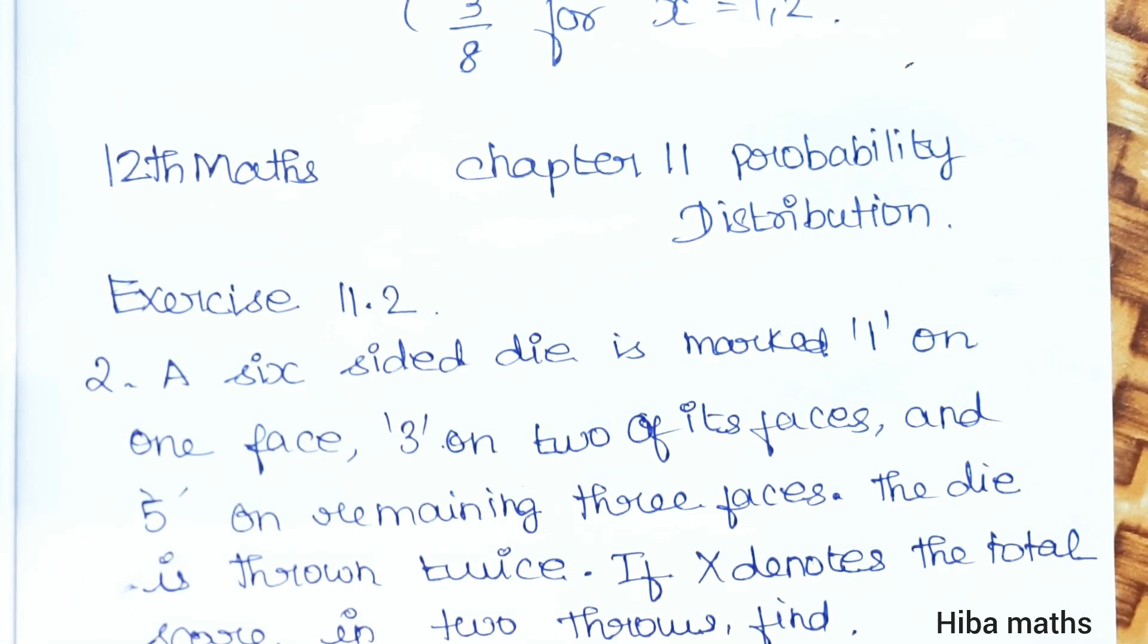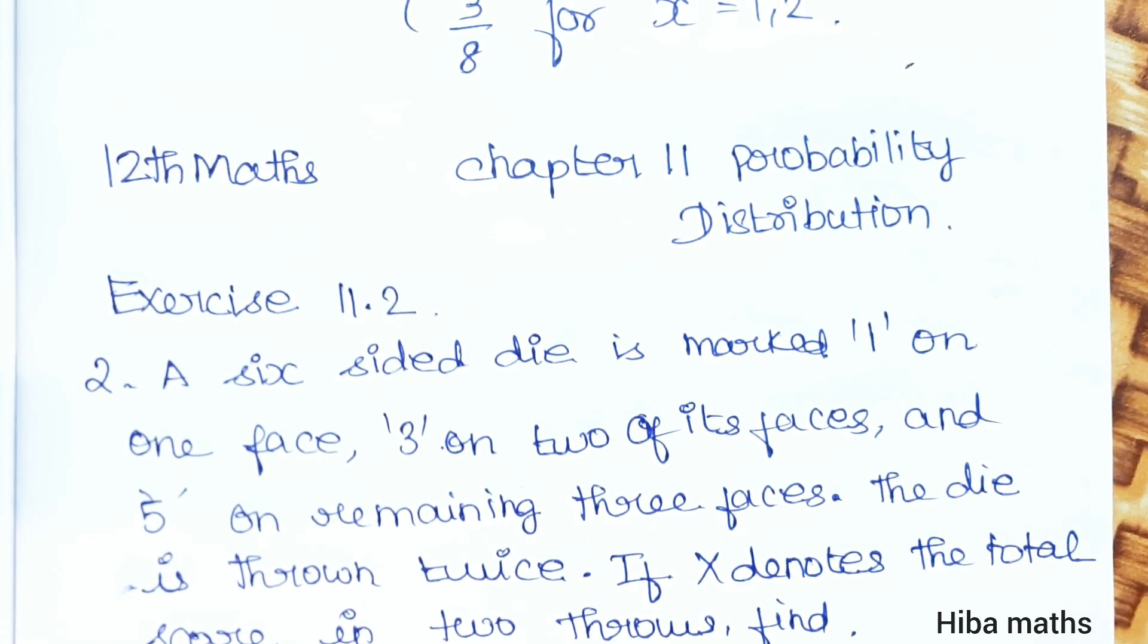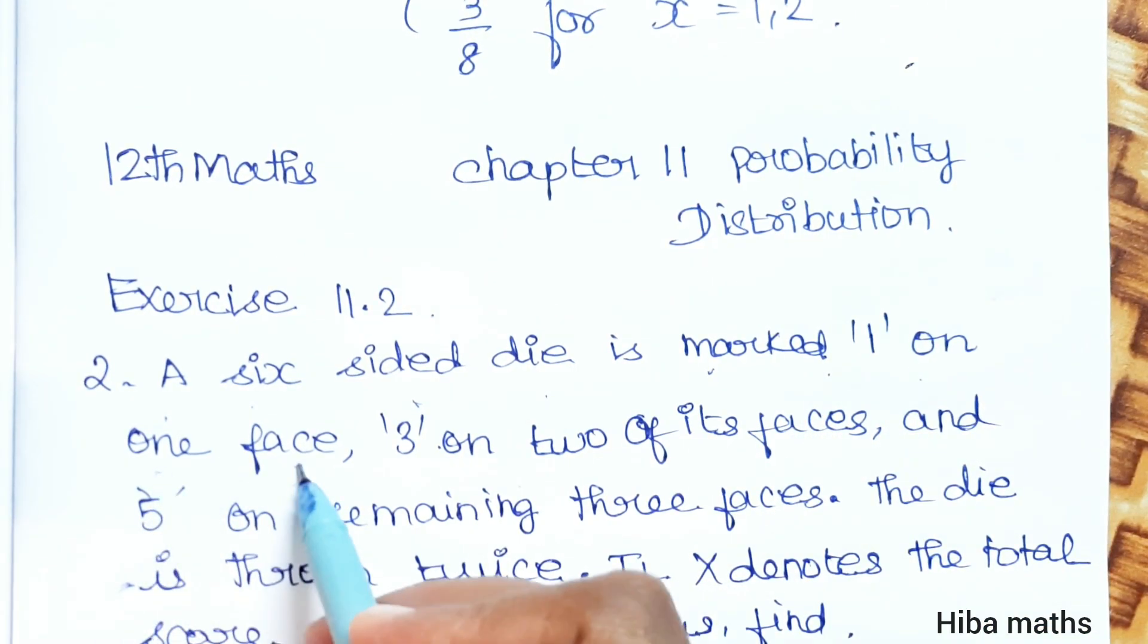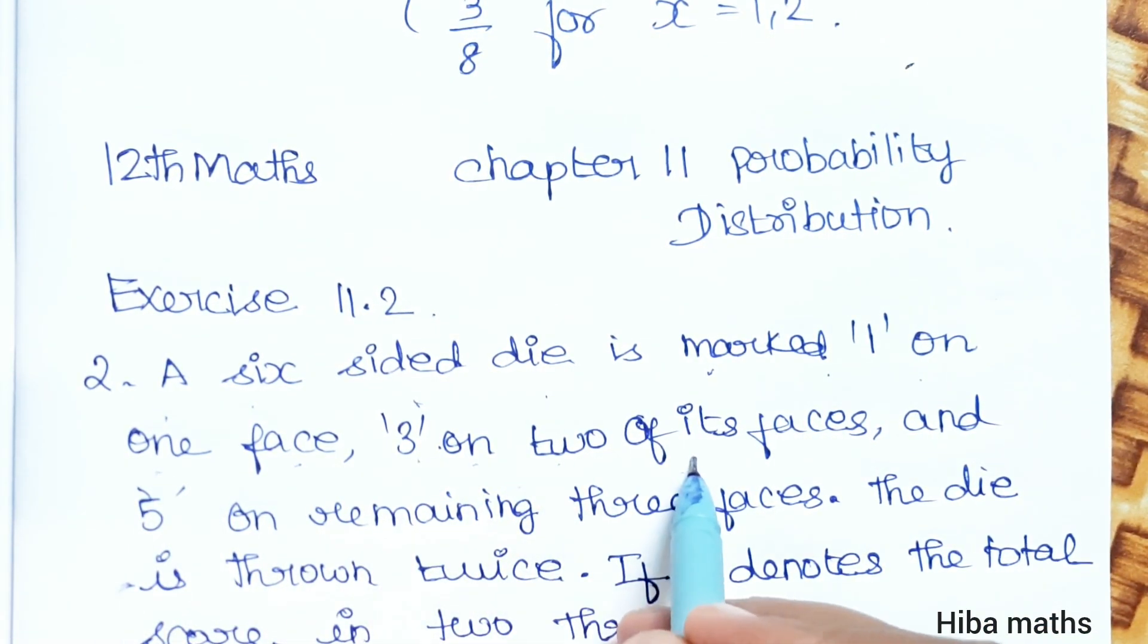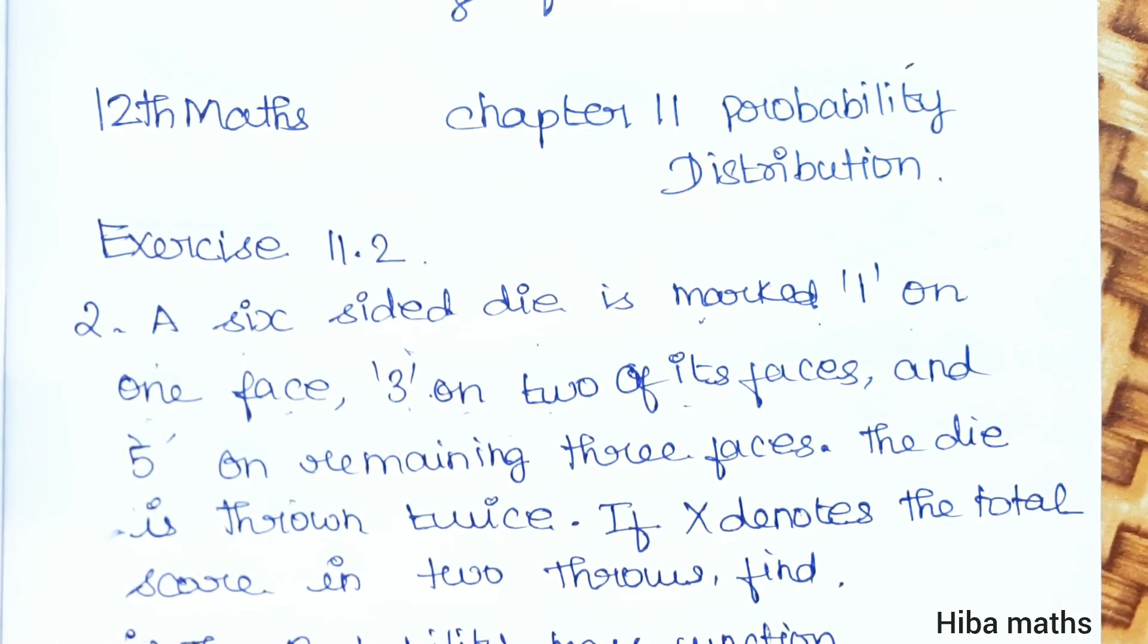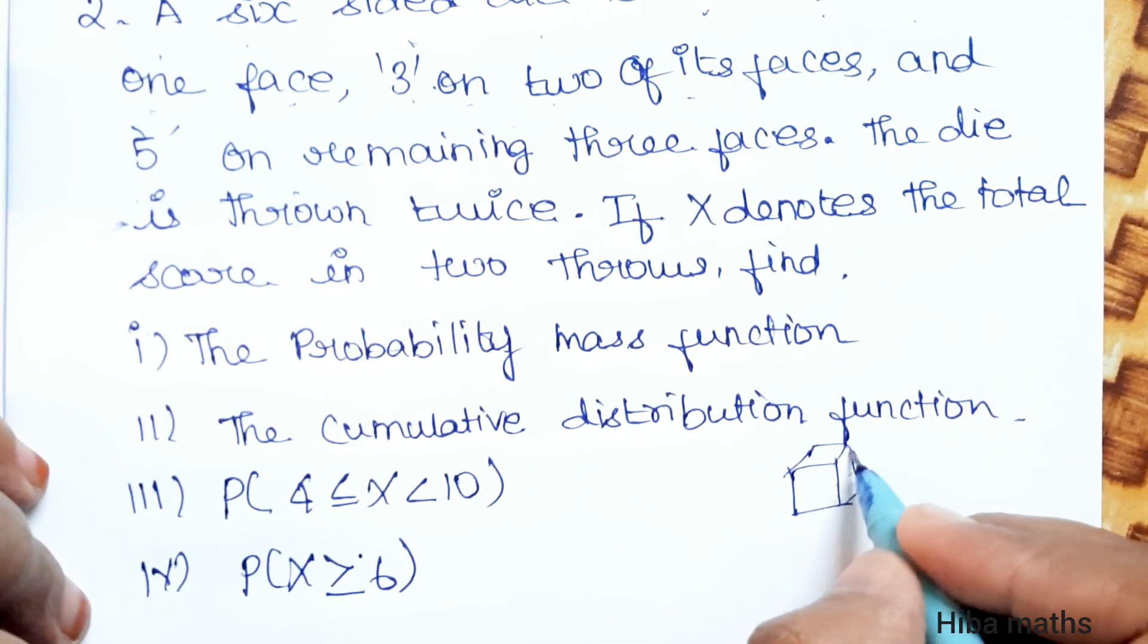Hello students, welcome to Hibamaks 12 Standard Math Chapter 11 Probability Distribution Exercise 11.2 second question. A six-sided die is marked one on one face, three on two of its faces and five on remaining three faces. This is what we have already seen. There is a die and there are six faces in the die.